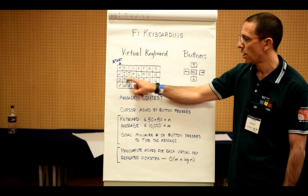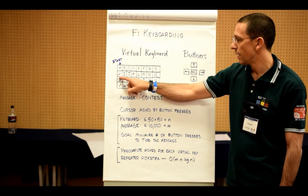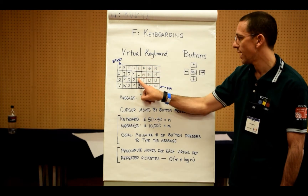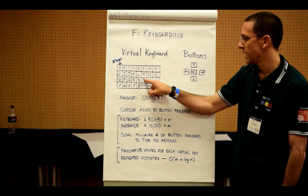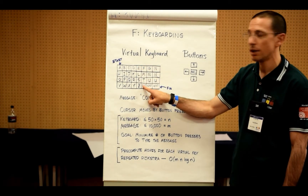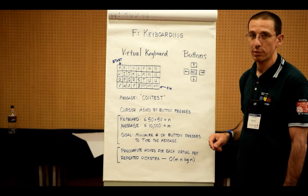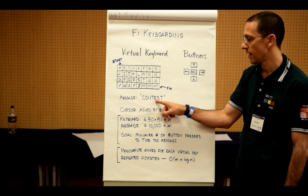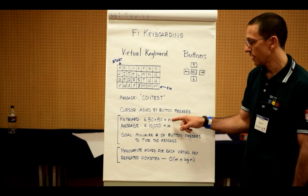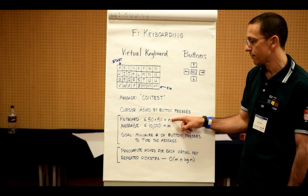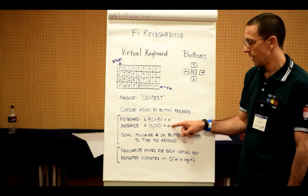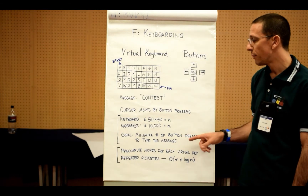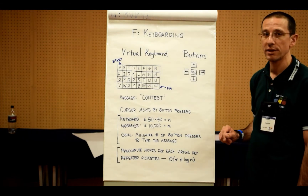We can further move to O, then N, T, E, S, T, then down to the enter key to produce the minimal number of button presses that produce the word 'contest'. And that is the goal. Given a keyboard of size up to 50 by 50 and a message of up to length 10,000, we want to minimize the number of button presses to type the message.